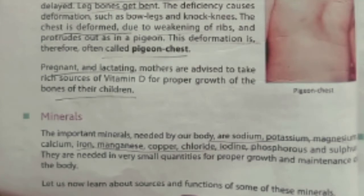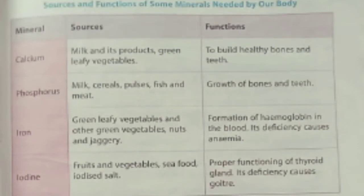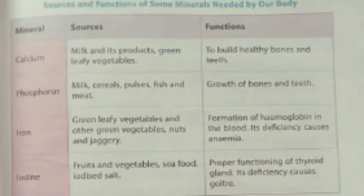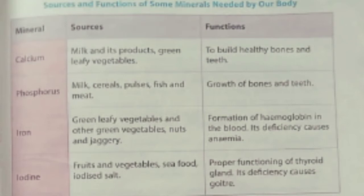In this table, some minerals are given along with their sources and functions. The first mineral is calcium. Sources of calcium are milk and milk products like ghee, butter, and curd, as well as green leafy vegetables. The function of calcium is to keep our bones strong and teeth healthy. The next mineral is phosphorus, which is present in milk, pulses, fish, and meat. Phosphorus also helps to grow bones and teeth.